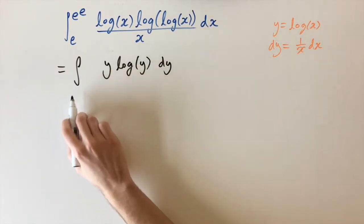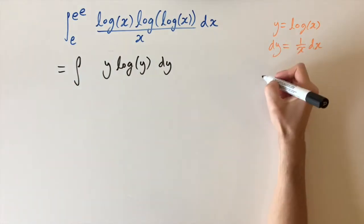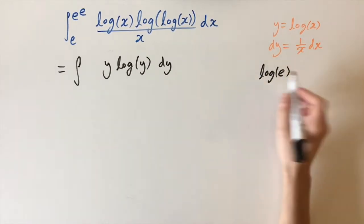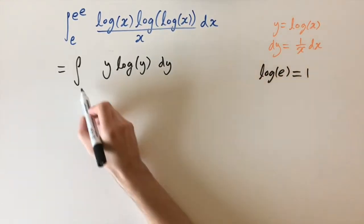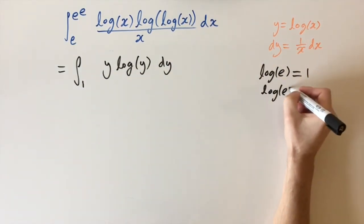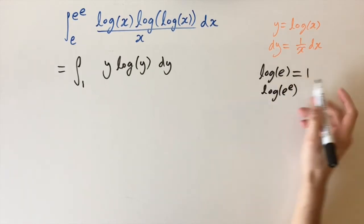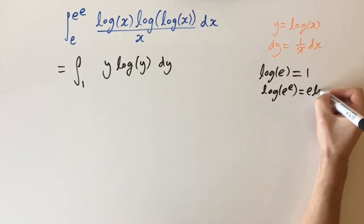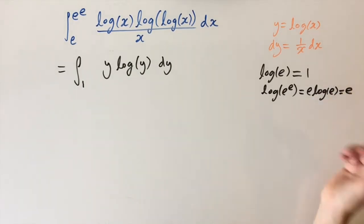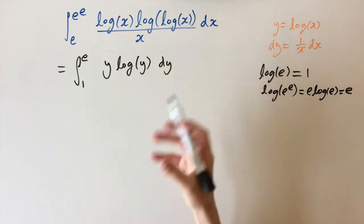We need to think about the limits — what do they change to? If we input e, we get logarithm of e, which is just 1, so our lower limit is 1. And if we put logarithm of e to the power e, using the power law we bring down the e: e times log e equals e, since log e is 1. So our upper limit is e. Already this is a lot nicer.